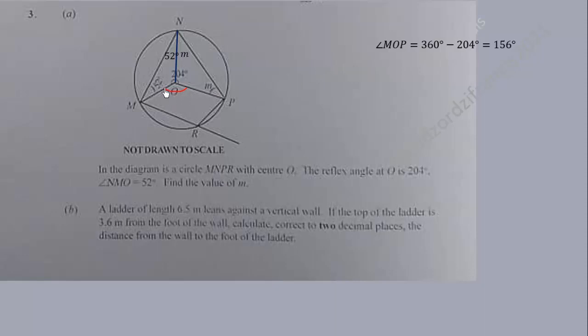Now we can use this to find this angle here. This angle is half of the angle at the center, which is half of 156 degrees. So it means that half of 156 should be equal to 52 plus M, because the angle at the center is twice the angle at the circumference, or the angle at the circumference is half of the angle at the center. So we can solve this for M. Half of 156 is 78, and when we subtract, we get M to be 26 degrees. So that's one way.